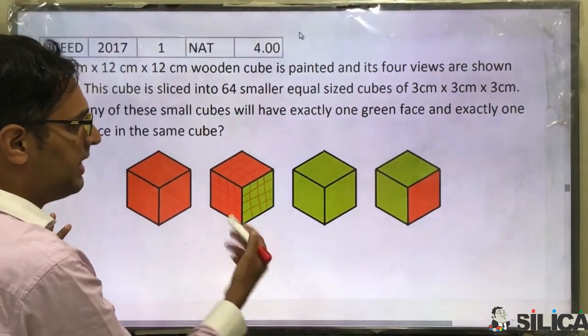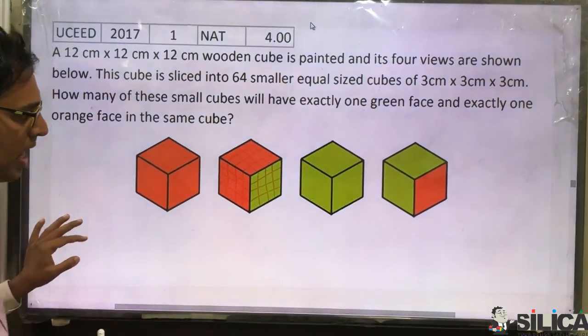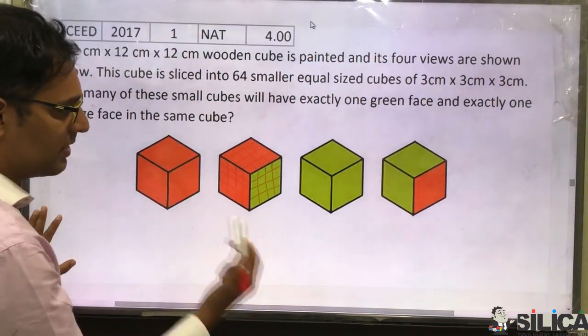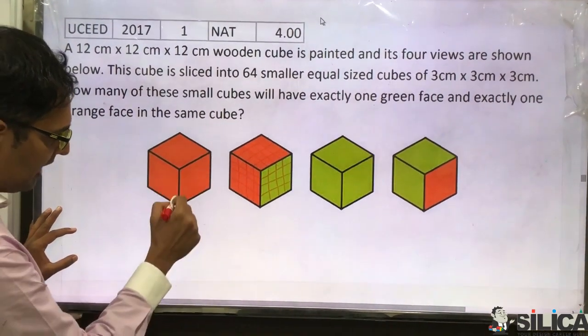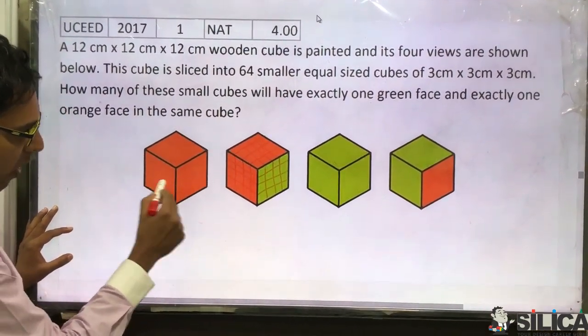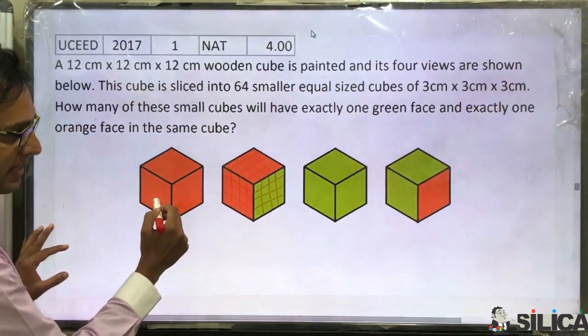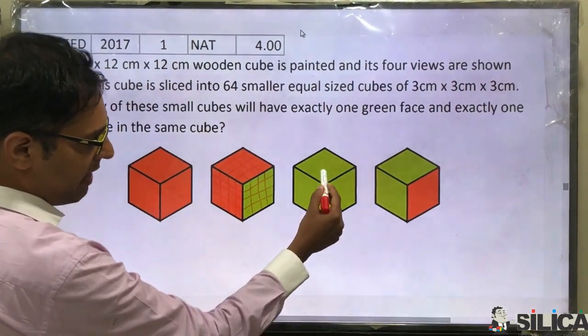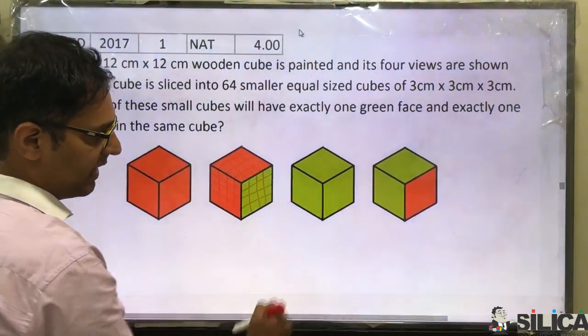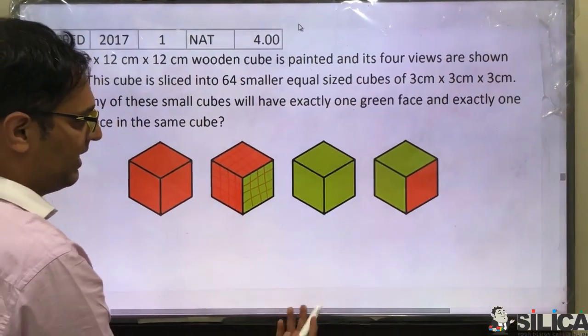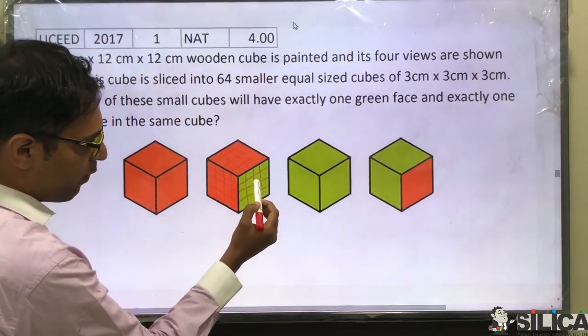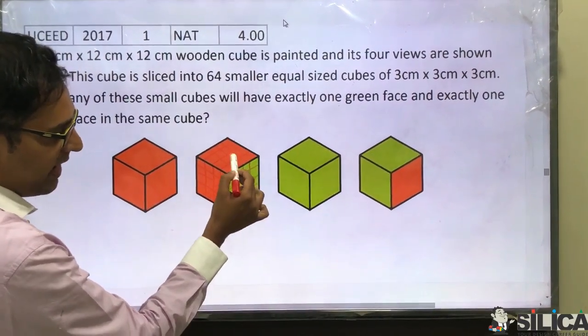Now let's see how many such edges will be there. You know that a cube has 12 edges. Out of that, 1, 2, 3 will have only orange on both sides. Another 3 will have only green color on both sides of the edge. So that makes 6. The remaining 6 will be such that they have one side green and one side orange.